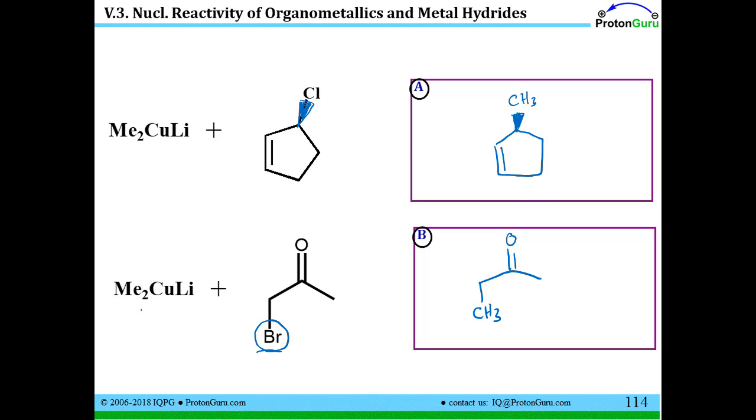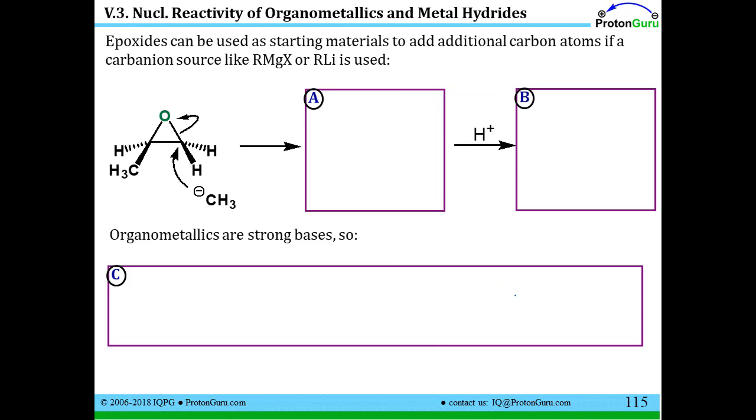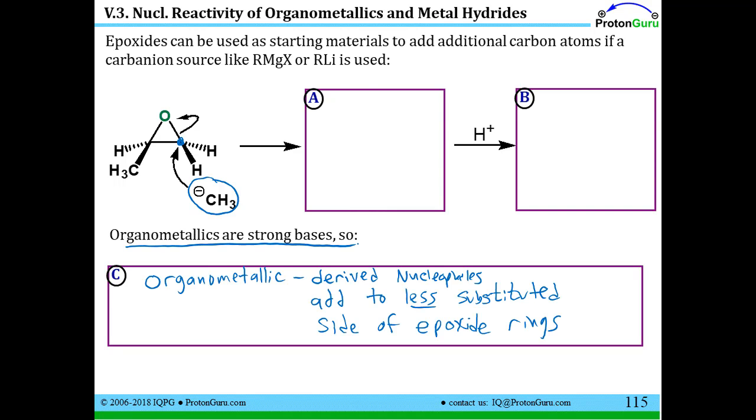If we think back to what we learned about in lesson 2.15 about ring opening of epoxides, we kind of already know that a nucleophile can attack the less substituted side of the epoxide ring. In some cases, if you have acidic conditions, you'll attack the more substituted side. But remember, organometallics are strong bases. So in the case shown here, this methyl group could have come from a Grignard reagent or from an organolithium reagent, as indicated here. And we'd open the ring up to make the initial anion.